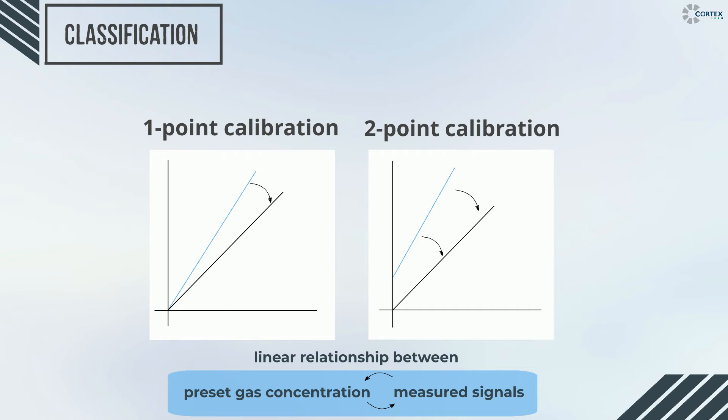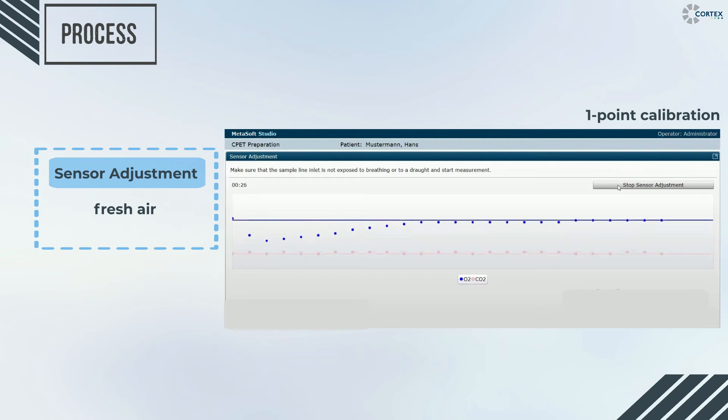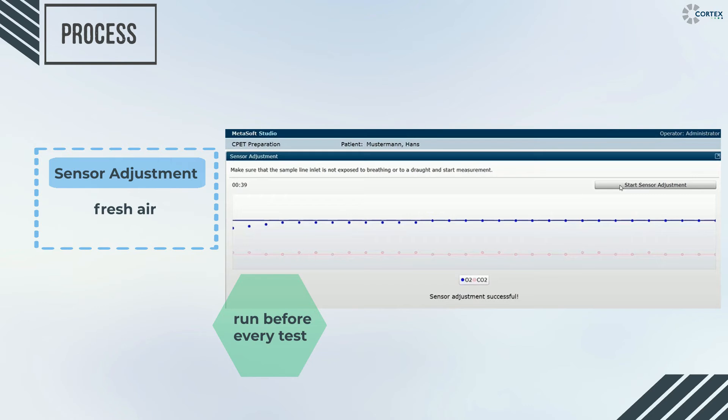The one-point calibration lasts less than one minute, and the two-point calibration only two minutes. The one-point calibration on our software is called sensor adjustment and uses fresh ambient air to perform its validity. As described earlier, this step is repeated before each test with the help of a background view.